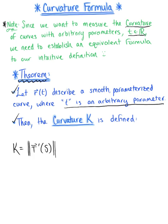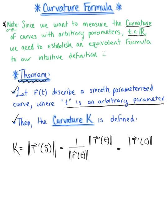We need an arbitrary parameter definition. This is defined as 1 over the magnitude of the tangent vector with respect to that arbitrary parameter t, multiplied by the magnitude of the rate of change of the unit tangent vector with respect to that arbitrary parameter t. We can rewrite this as one single ratio. This is the definition we'll be using in computation for curves parametrized by vector valued functions of t.